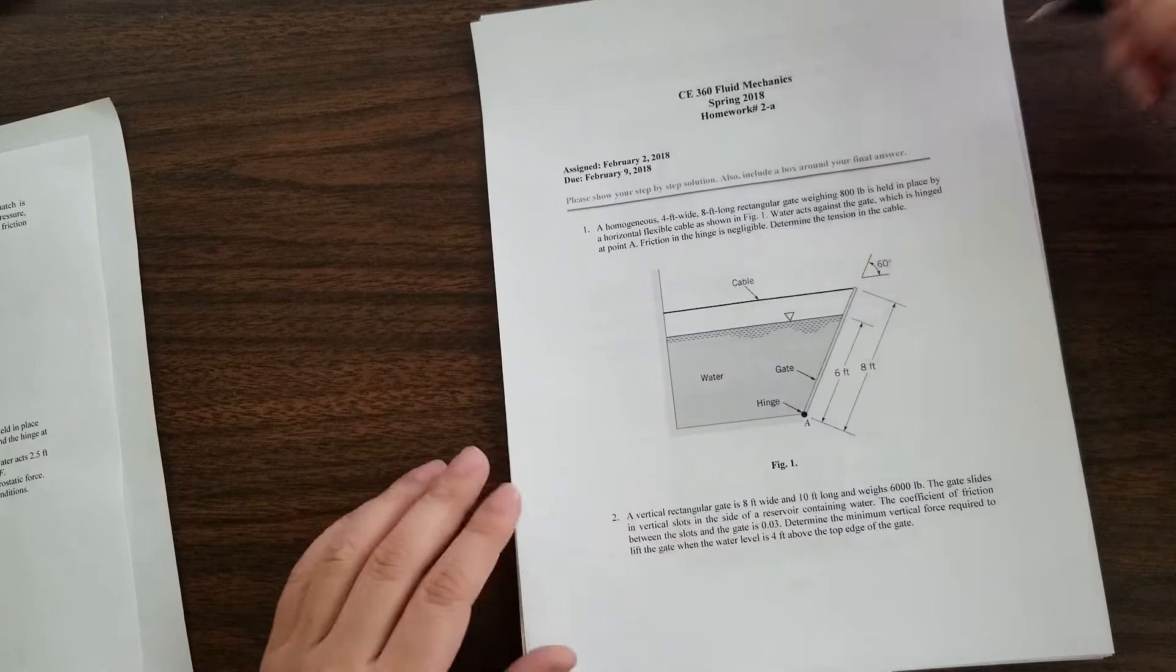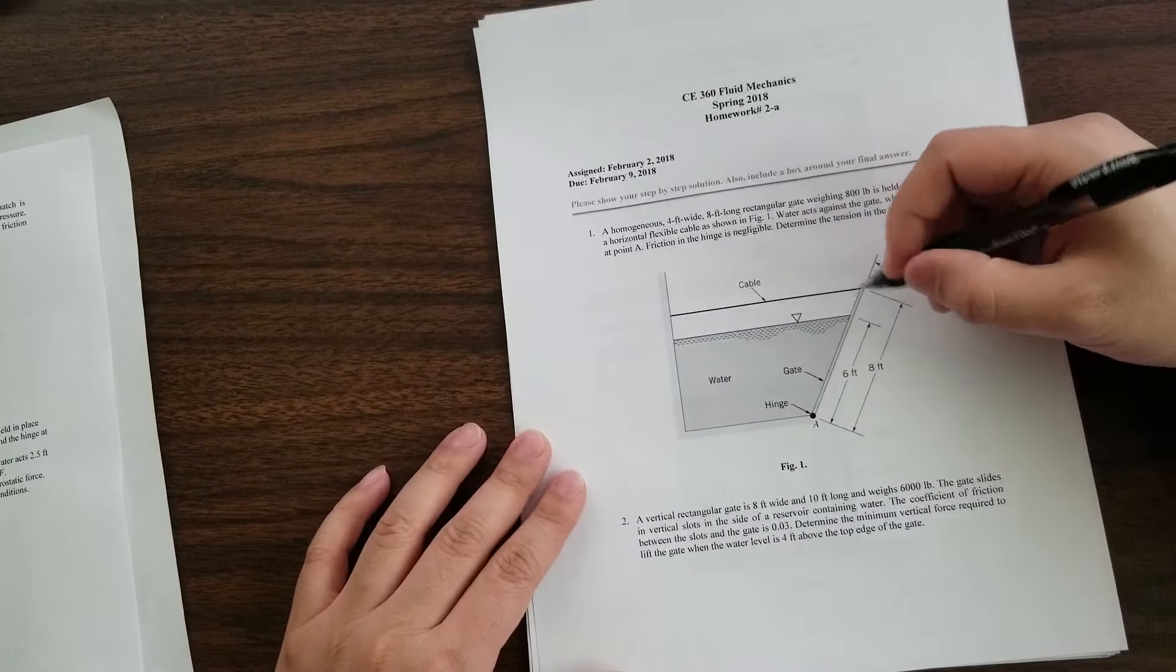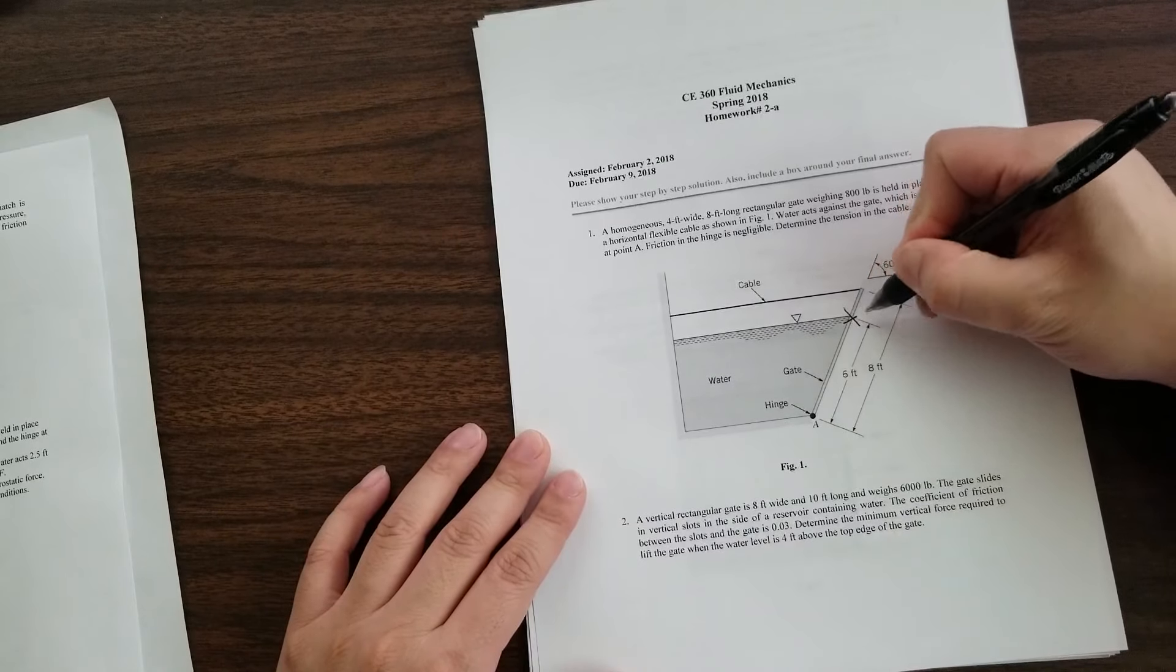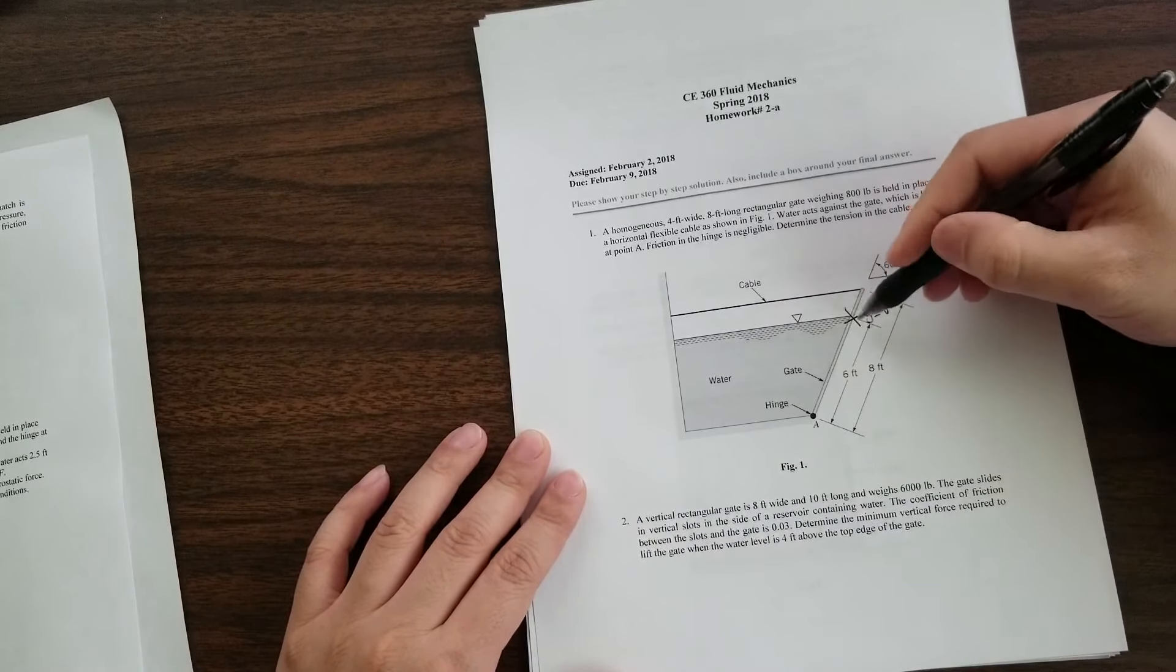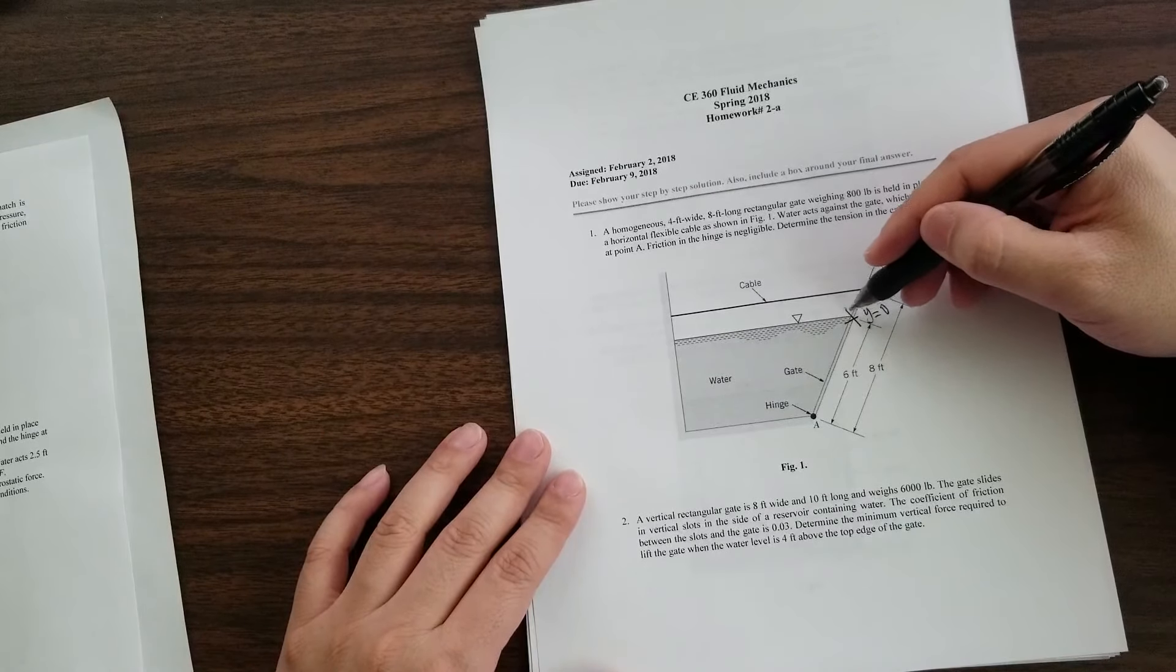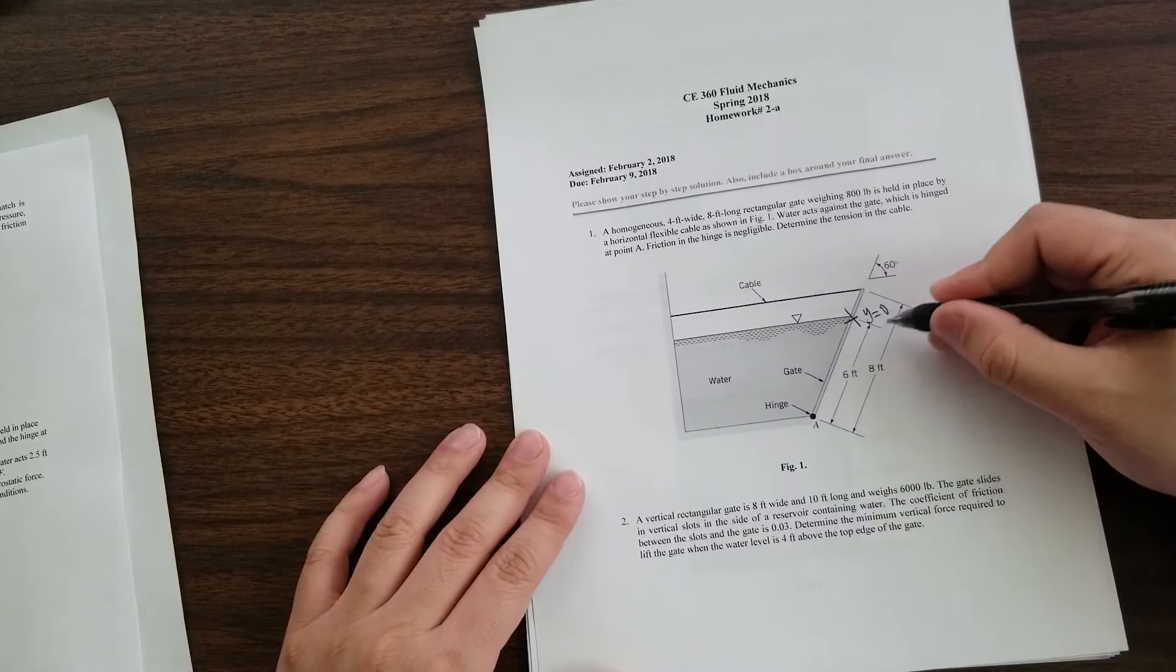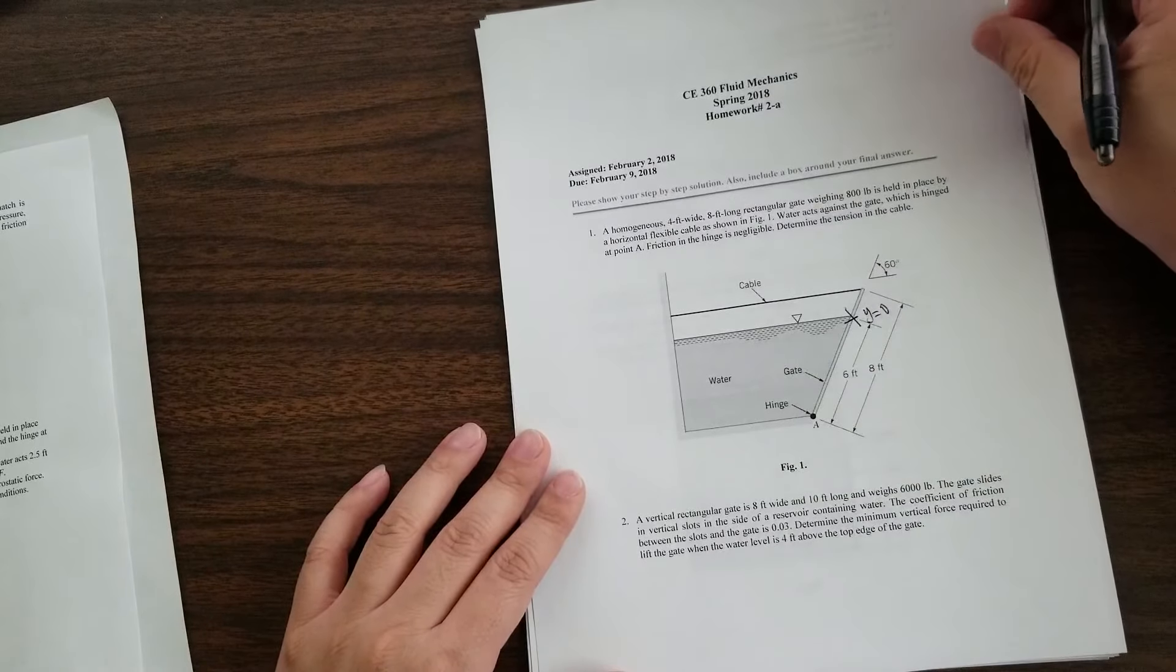All right. So the first one is probably the simplest. Talk about this in class. The thing you got to remember is that the y equal to zero starts from here, starts from the fluid air interface. That's where you should set y equal to zero. Once you get that, the rest is simple.